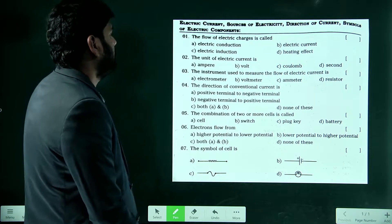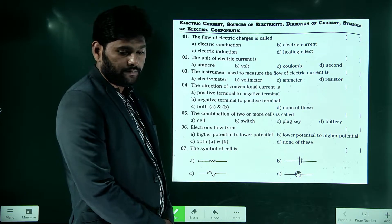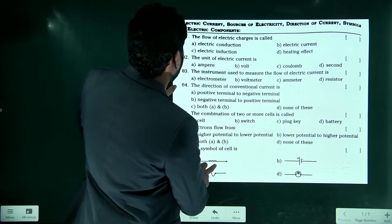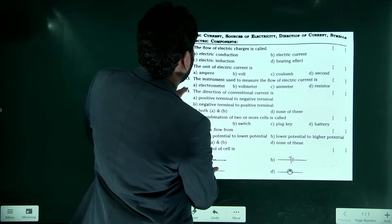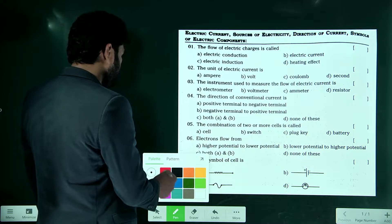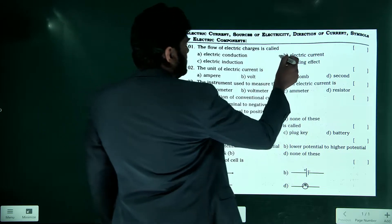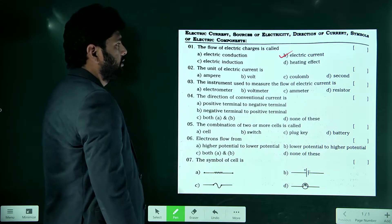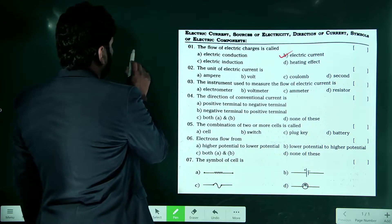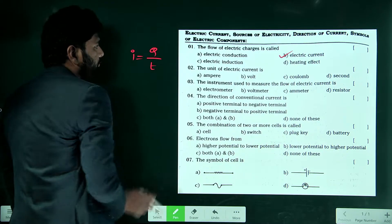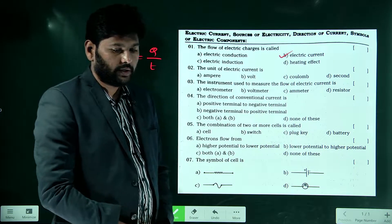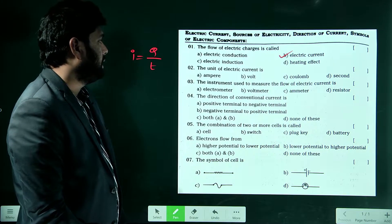The flow of electric charges is called — electric conduction, electric current, or electric induction? The correct answer is electric current. This is generally represented with I, where I equals Q by T. The electric charges flow is known as electric current, not electric conduction.